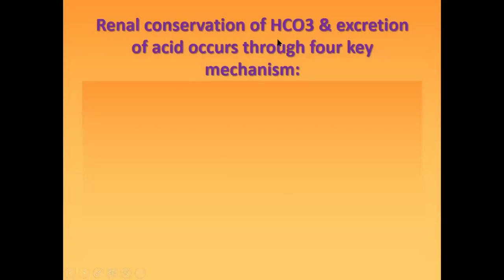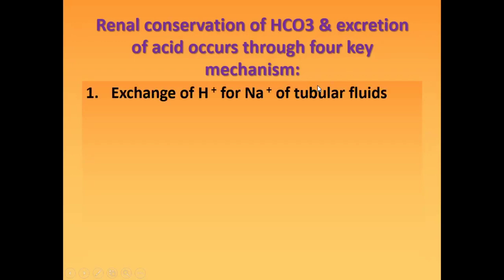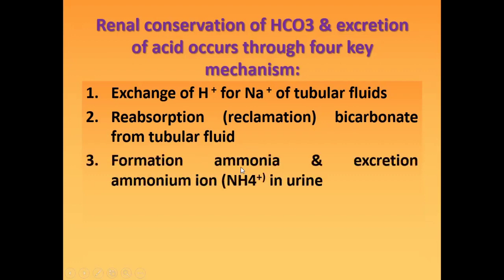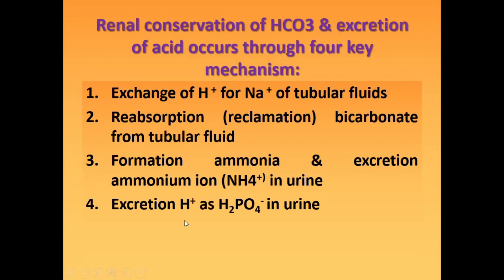Renal conservation of HCO3 and excretion of acid occurs through four key mechanisms: first, exchange of hydrogen ions for sodium of tubular fluids; second, reabsorption or reclamation of bicarbonate from tubular fluid; third, formation of ammonia and excretion of ammonium ions in the urine; fourth, excretion of hydrogen ions as H2PO4 in urine, that is the phosphate buffer.